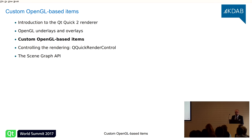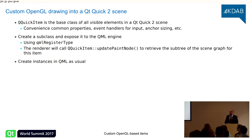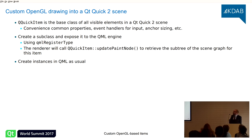Let's talk about creating custom OpenGL-based items — items I can put inside my Qt Quick scene as peers, placed anywhere, with all the capabilities of any built-in Qt Quick item. A custom item in Qt Quick is created by subclassing QQuickItem, the base class of all visible elements in Qt Quick. It contains properties like x, y, z, width, height, input event handlers, and the anchoring system. You can expose your subclass to QML using qmlRegisterType.